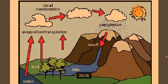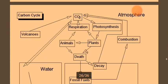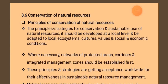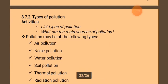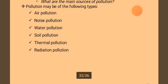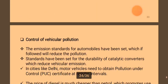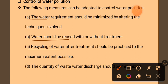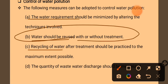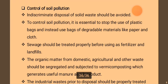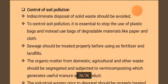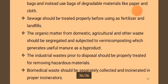Cycling of nutrients and water in the ecosystem. Conservation of natural resources. Pollution types include noise pollution, water pollution, energy and soil pollution, thermal pollution, and radiation pollution. Control mechanisms address water pollution, soil pollution, and soil degradation including erosion.